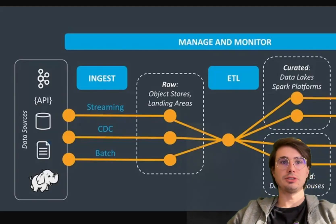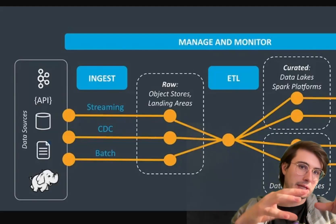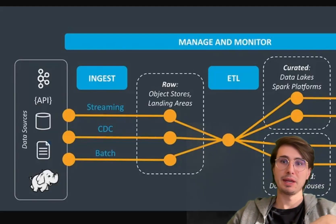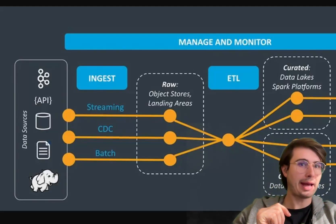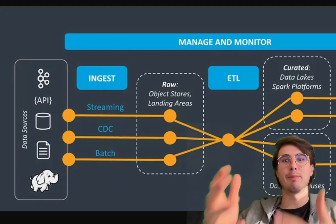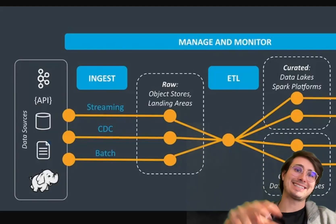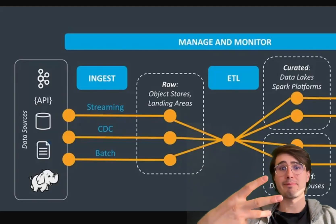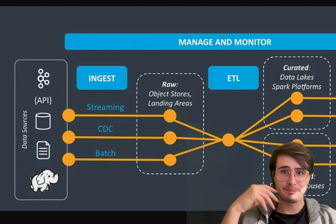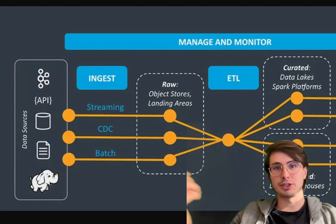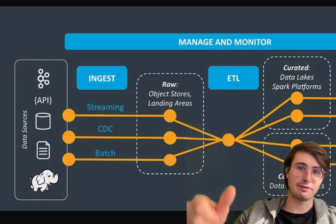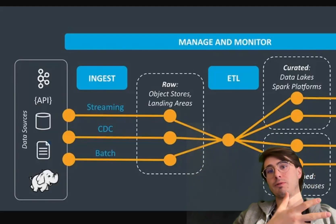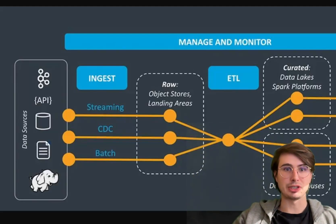The next thing you're going to want to think about is your data ingestion strategy. A clear ingestion strategy is really vital for maintaining order and structure within your data lake. Defining whether your data lake is going to ingest data in batch, streaming, or a hybrid mode is critical, and you'll want to base that decision on the needs of your end users and latency requirements. You'll likely have a mix of different types of ingestion tools — things like Apache Kafka, Apache Airflow, and AWS Glue are all flexible options for managing both batch and real-time ingestion.